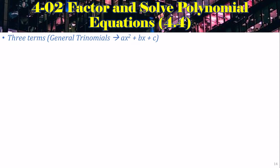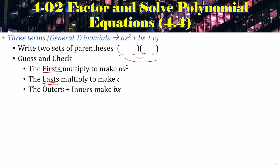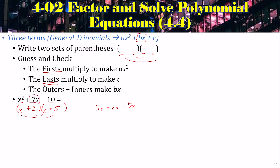Still on step 2: if there are three terms, you use a general trinomial — we've already done this with quadratics. Write two sets of parentheses and guess and check: the firsts make the first term (a²), the lasts make the last term (c), and then you check the outers plus inners to see if it makes the middle. For example, x² + 7x + 10: check for GCF — there isn't one. We need x and x for the first, and 2 and 5 for the 10. Check: 5x + 2x = 7x — that is the middle, so we've factored correctly.